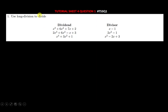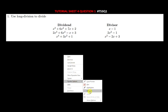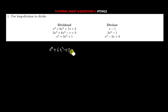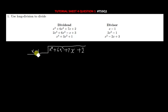The first question is saying: use long division to divide the divisor into the dividend. These questions are simple — long division is just the same as what you learned at high school, starting from around grade five. The dividend is x³ + 6x² + 7x + 2, and the divisor is x − 1, placed under the long division symbol.